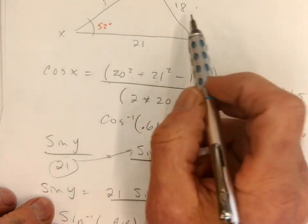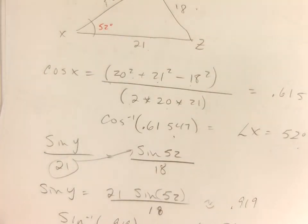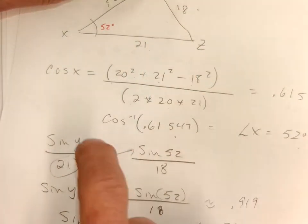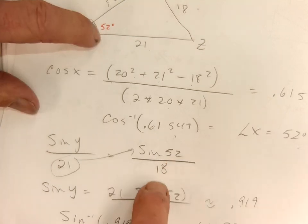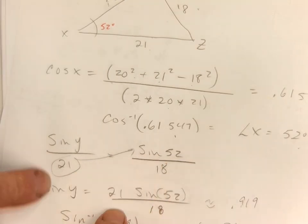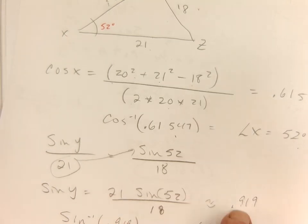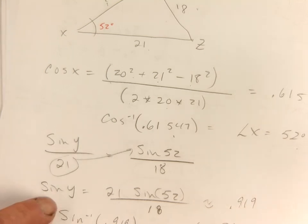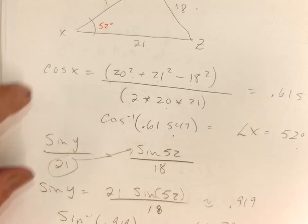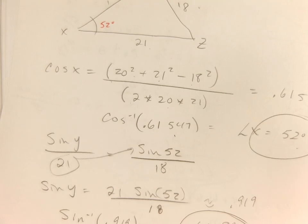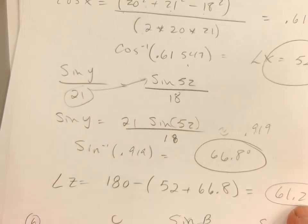Once I have an angle, I have my opposites, so I can use the law of sines. I found sine of y: sine of y over 21 equals sine of 52 over 18. I multiplied by 21 and used my calculator, getting a decimal of about 0.919. Taking sine inverse of 0.919, I got about 66.8 degrees. Then, since there are 180 degrees in a triangle, I added the two acute angles and subtracted from 180, getting 61.2 degrees.